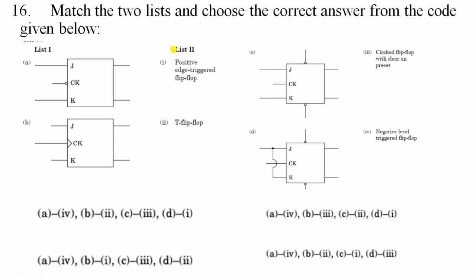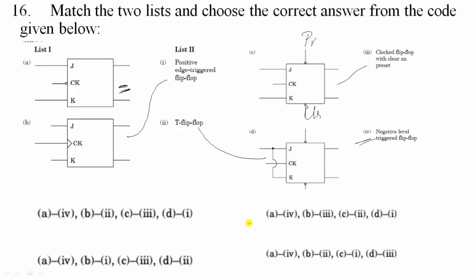Sixteenth question — match the following. Shorting J and K gives a toggle flip-flop. The next is a positive edge-triggered flip-flop. The next is a negative edge-triggered flip-flop. The last one is a clocked flip-flop with preset and clear. The corresponding option is option P.